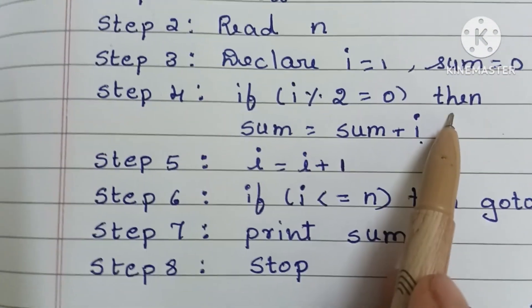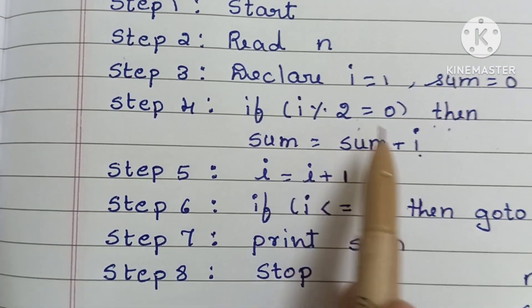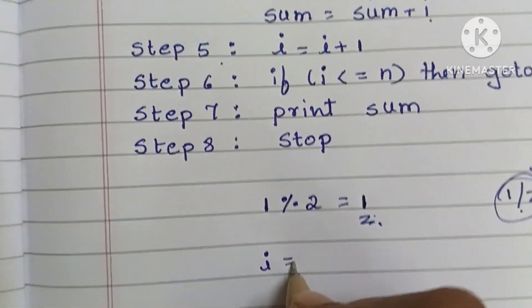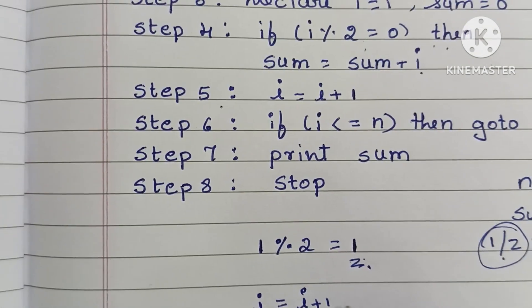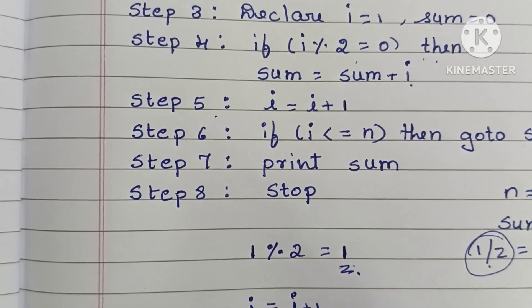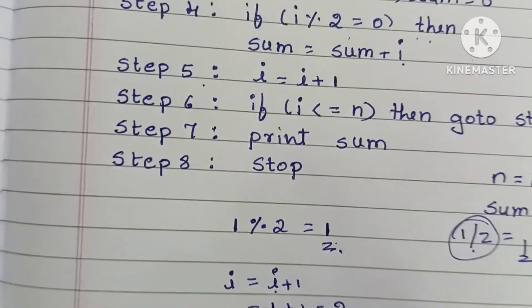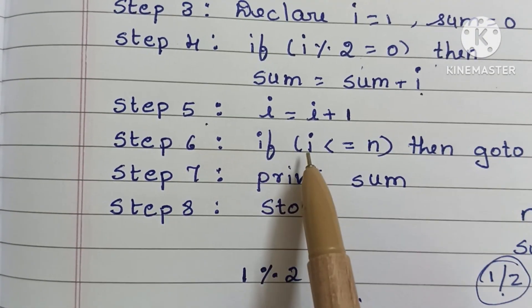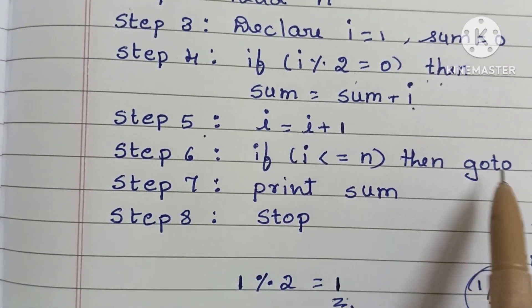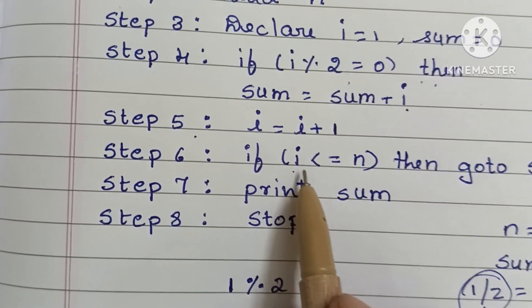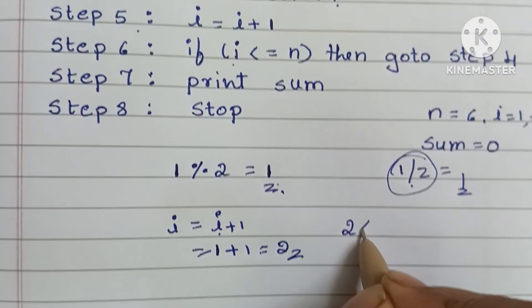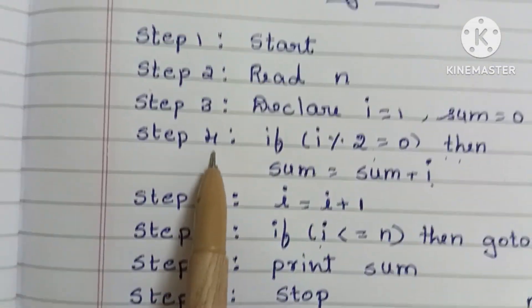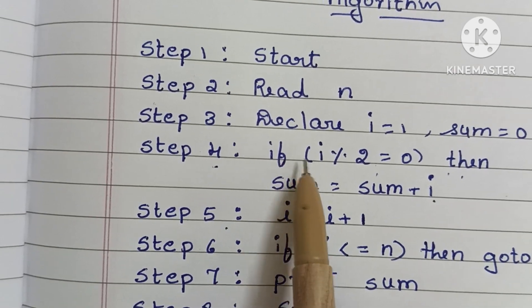Since the condition is false, it goes directly to step 5. We increase the value of i: i equals 1 plus 1, so i becomes 2. In step 6, we check if i is less than or equal to N: 2 is less than or equal to 6, so it goes back to step 4.